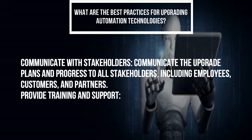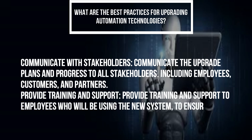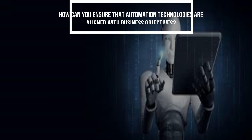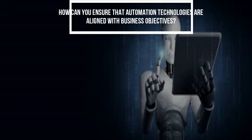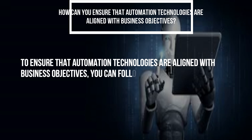Provide training and support to employees who will be using the new system to ensure a smooth transition. How can you ensure that automation technologies are aligned with business objectives? To ensure alignment with business objectives, you can follow these steps.